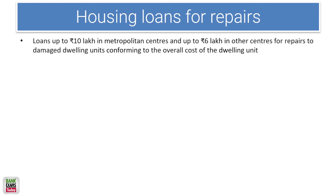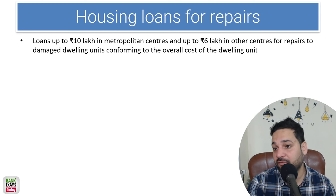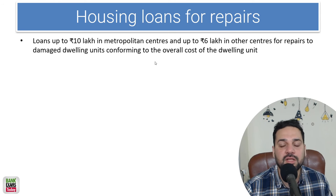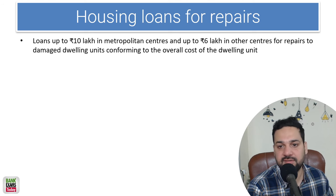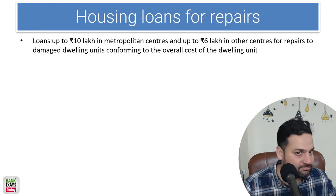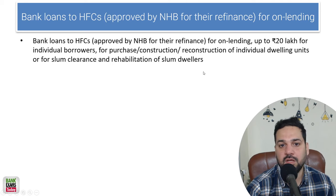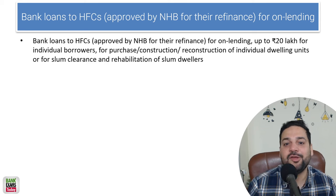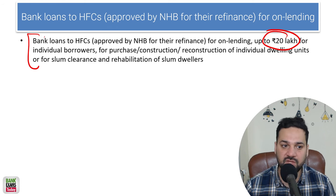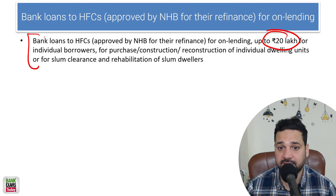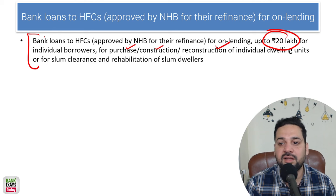Housing loans for repairs: loans up to 10 lakh in metropolitan centers (population 10 lakh and above) and up to 6 lakh in other centers are considered for priority sector lending. Loans for individual dwelling units for slum clearance or rehabilitation will also be considered towards priority sector lending targets.